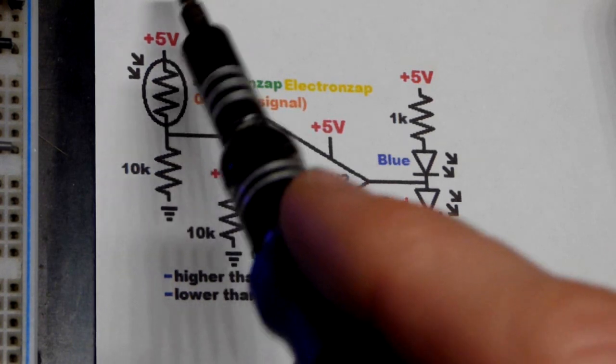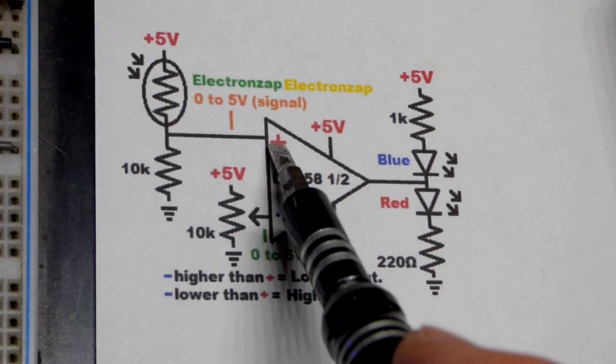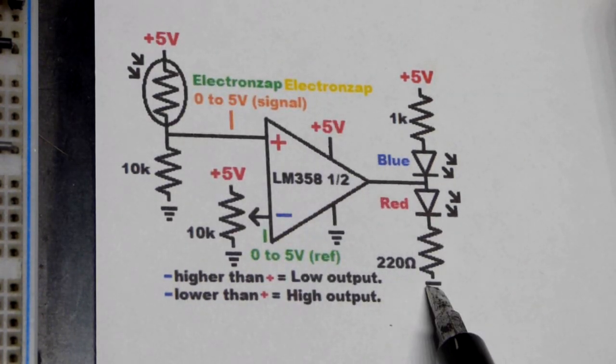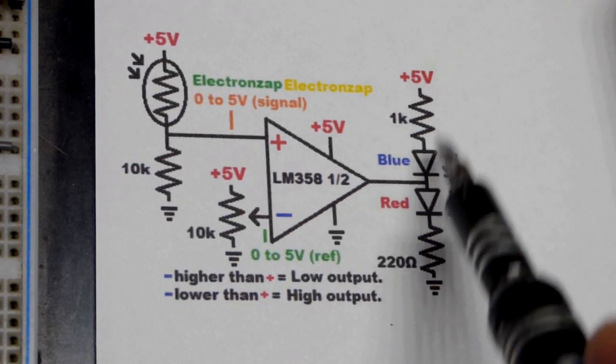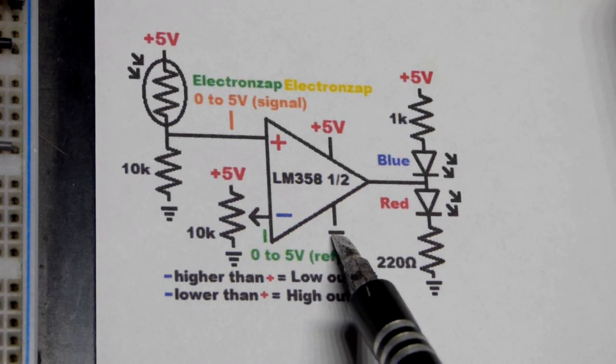When we get enough light falling on the light-dependent resistor, that raises the voltage and we get a high output. When it's dark enough, we have a low enough voltage right there and we have a low output.